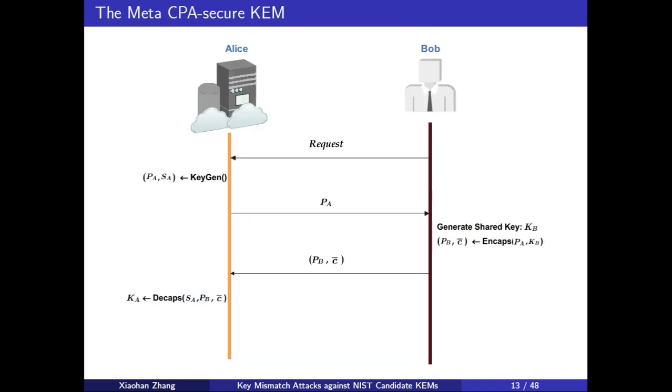Under the understanding of the difference between Diffie-Hellman protocol and the lattice-based DH-like key exchange protocol, we describe a framework of CPA Secure KEM. Firstly, Bob sends a request to Alice. Alice generates a public key PKA and a secret key SKA. Next, she sends public key PKA to Bob. Bob generates a shared key KB. For Bob, he generates a public key PKB and a ciphertext C-bar. Finally, he sends public key PKB and ciphertext C-bar to Alice. We notice that C-bar is the additional information that we mentioned earlier. Finally, for Alice's decryption part, she uses the secret key SA to decrypt the ciphertext C-bar, and she can get the same session key KA.